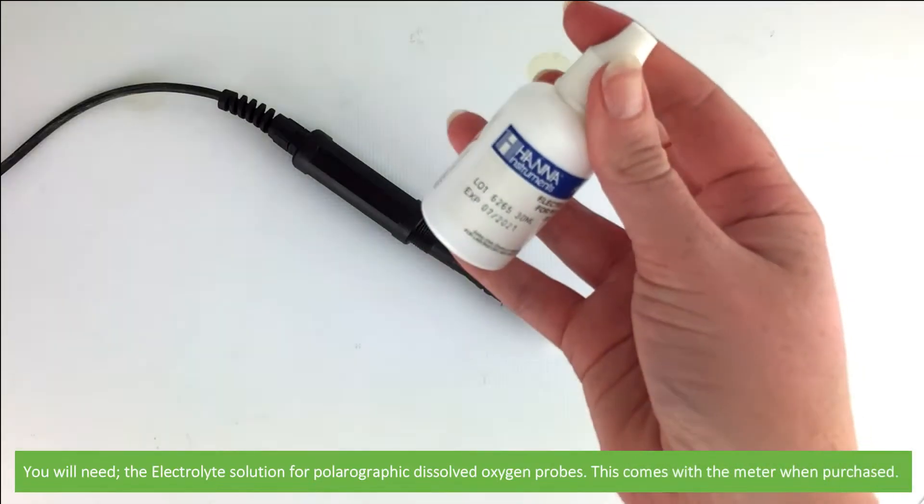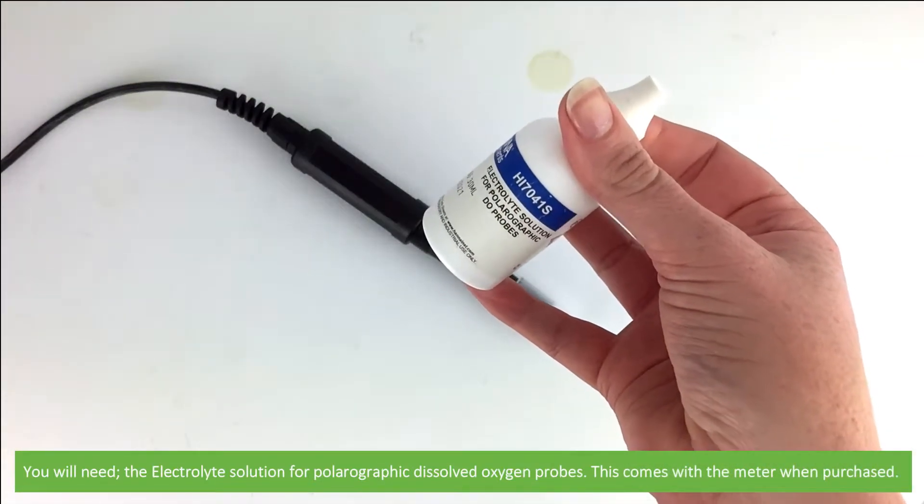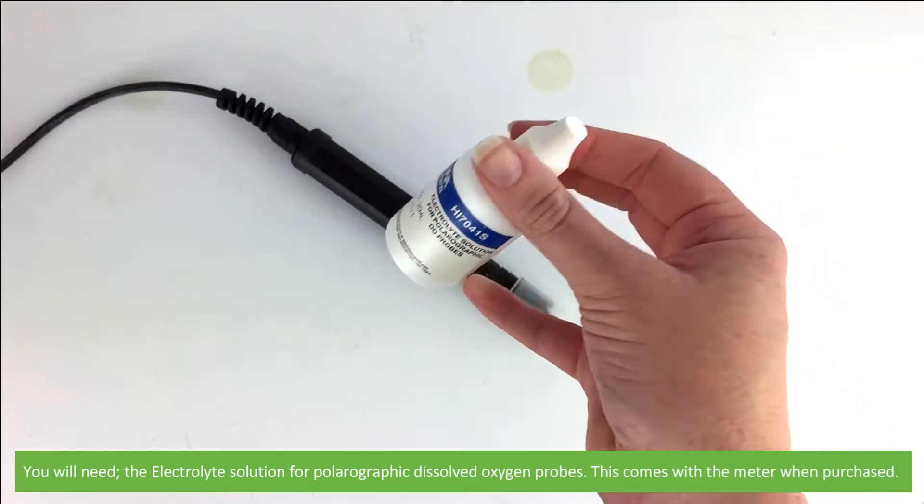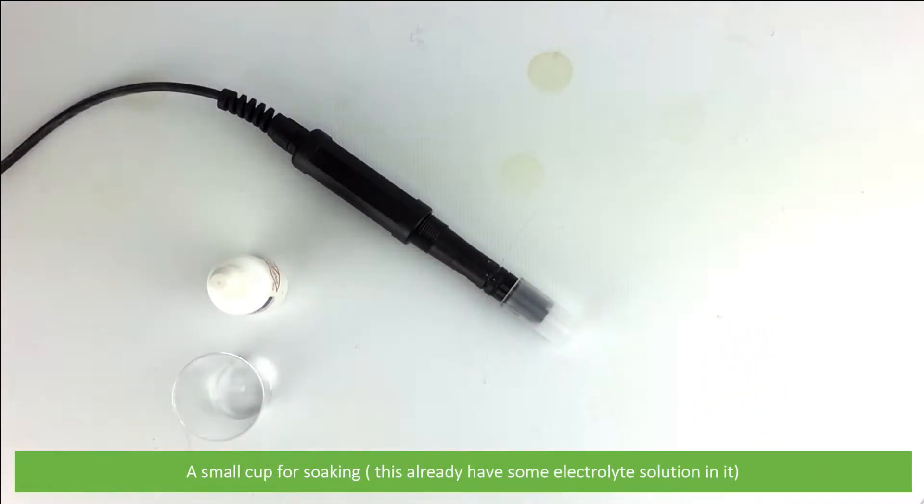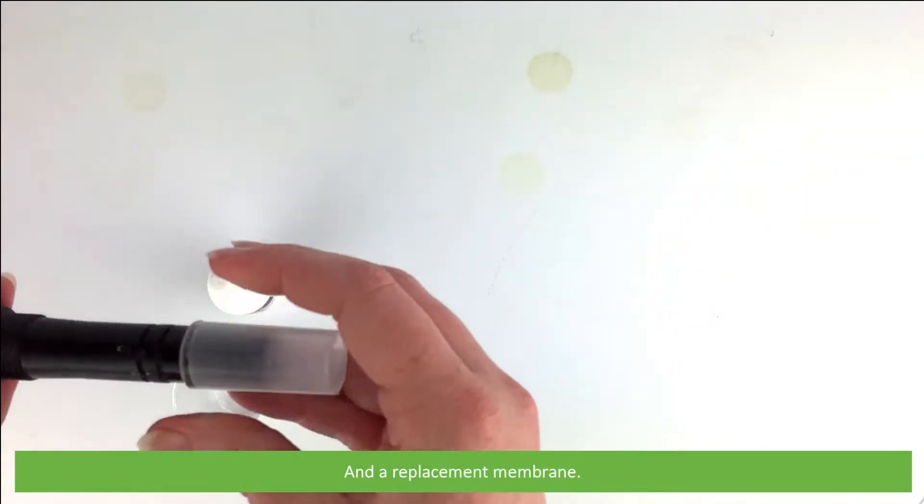You'll need the electrolyte solution for polarographic dissolved oxygen probes. This comes with the meter when purchased. A small cup for soaking, this already has some electrolyte solution in it, and a replacement membrane.